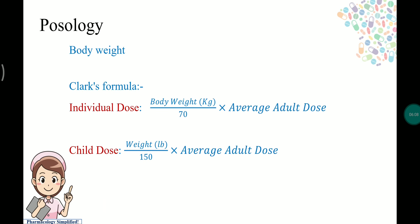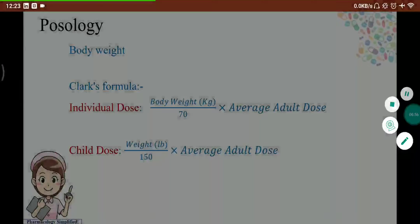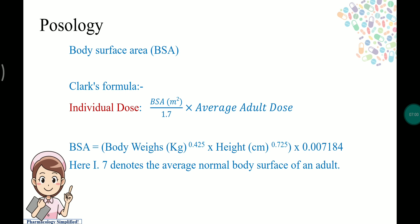Based on body weight, we use Clark's formula. For individual adult dose: body weight (in pounds) divided by 70, multiplied by the average adult dose. For child dose using Clark's formula: weight in pounds divided by 150, multiplied by the average adult dose.